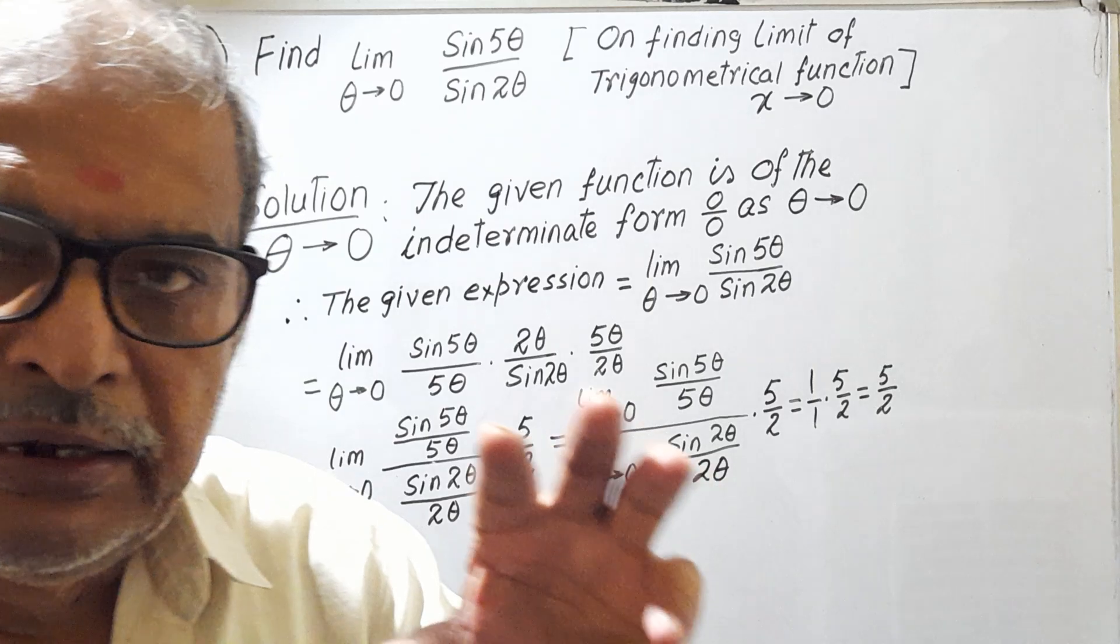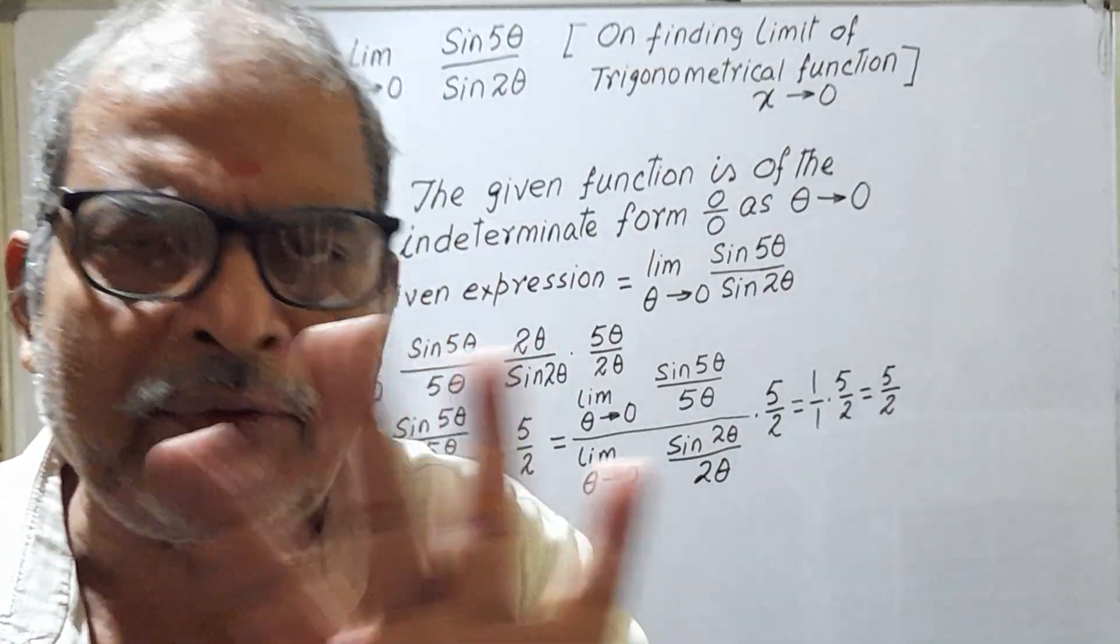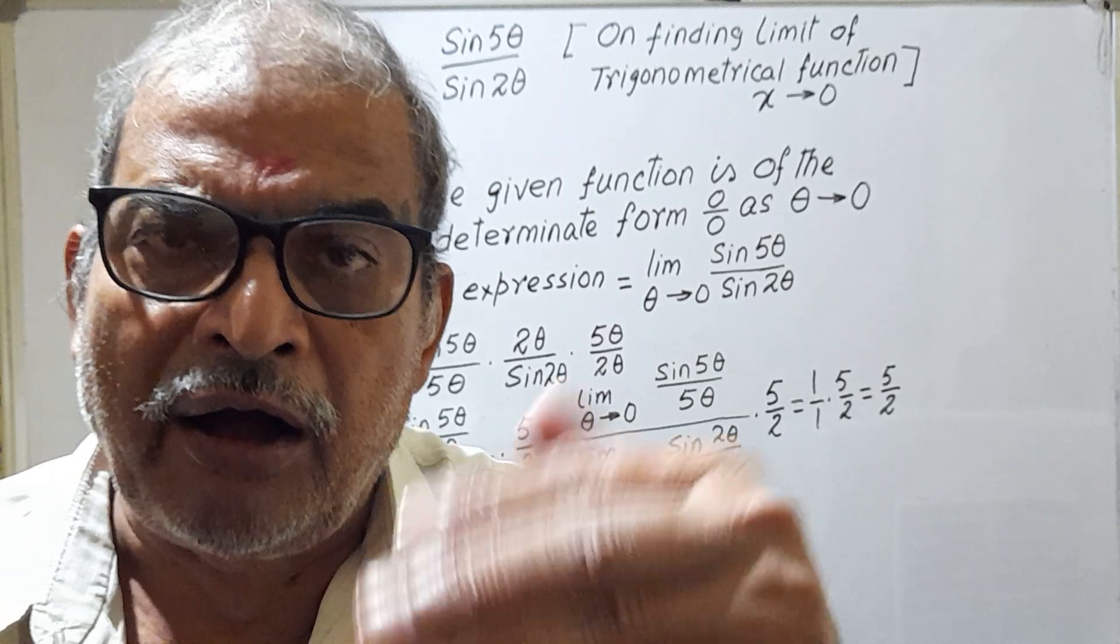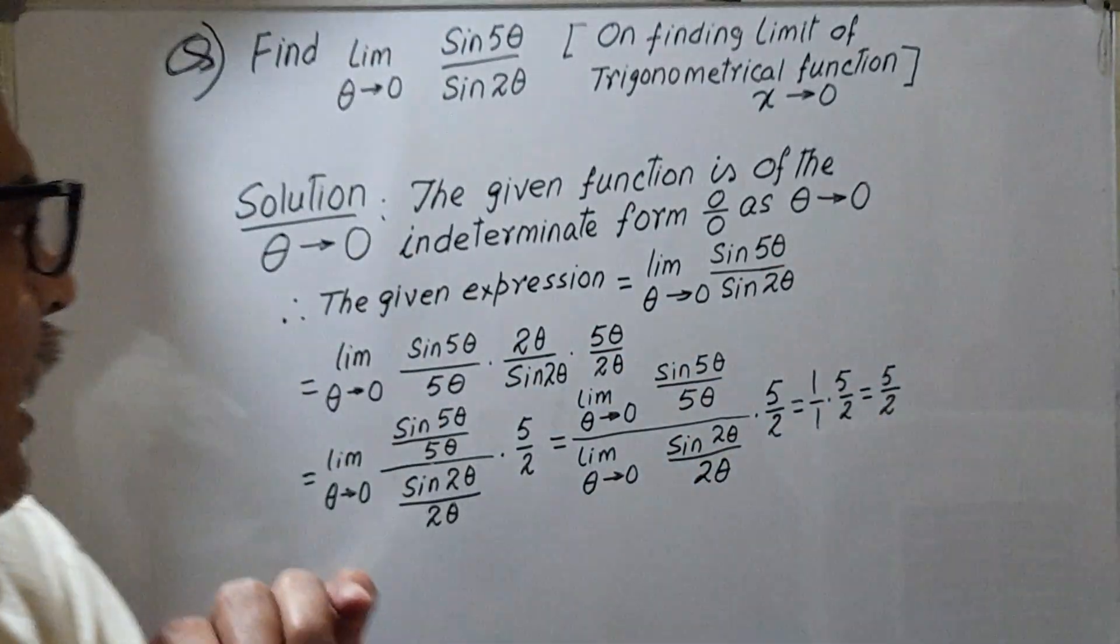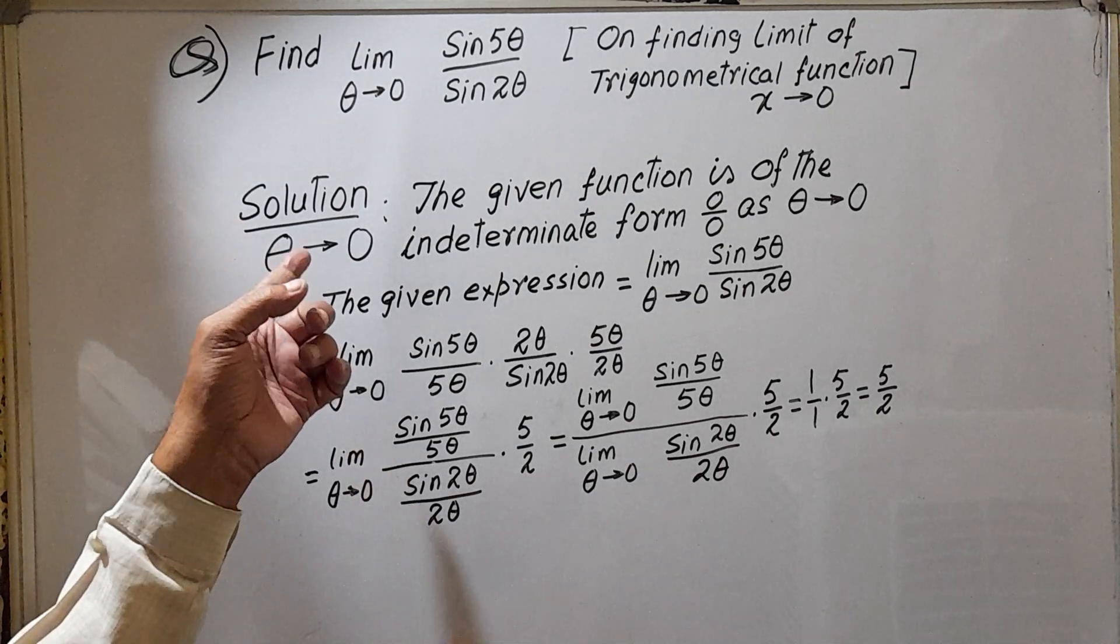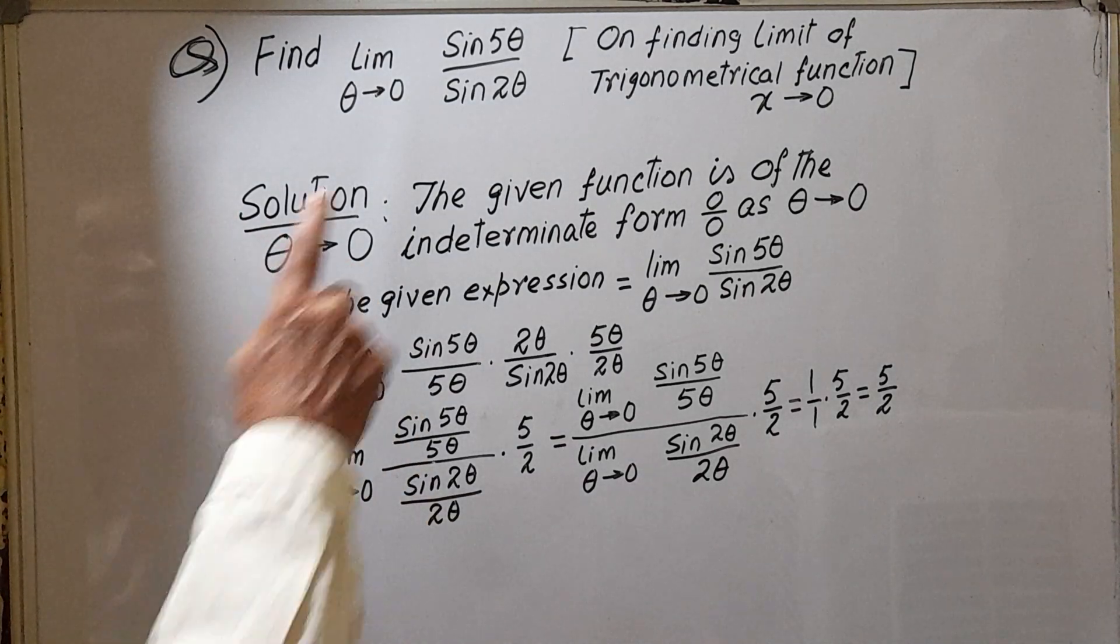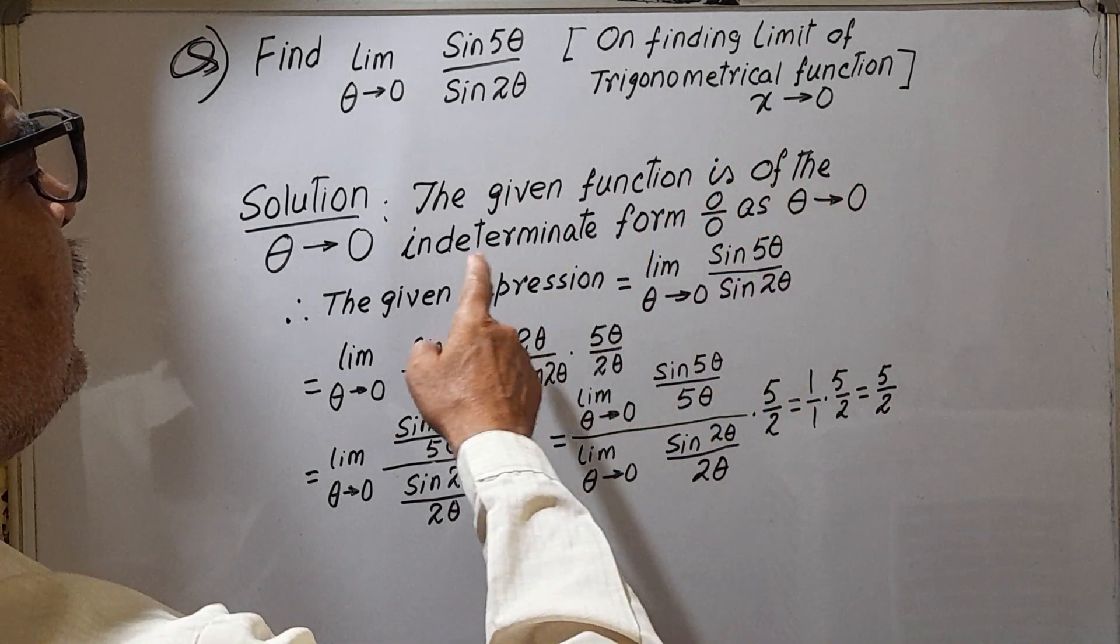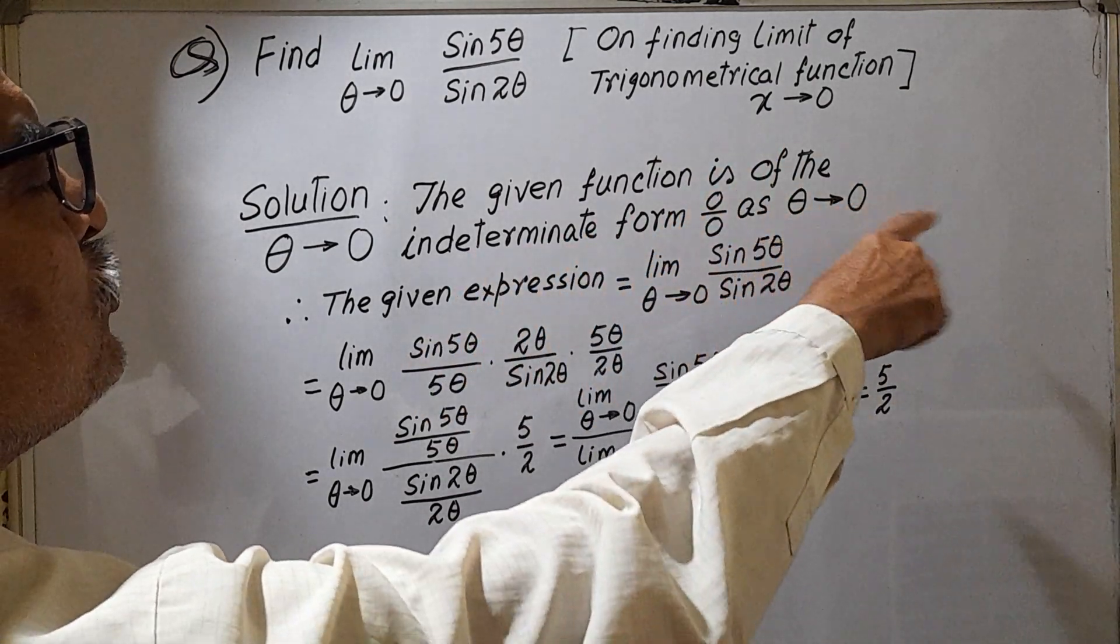Limit of trigonometrical function is of the indeterminate form 0 by 0 as theta tends to 0.